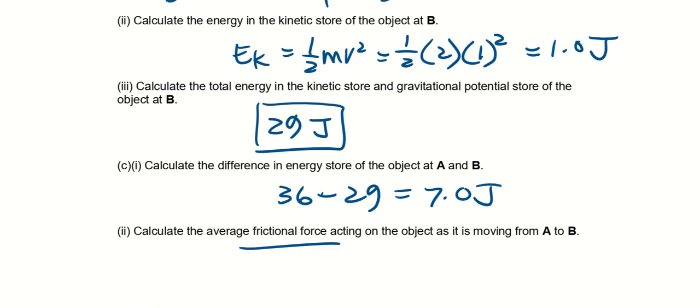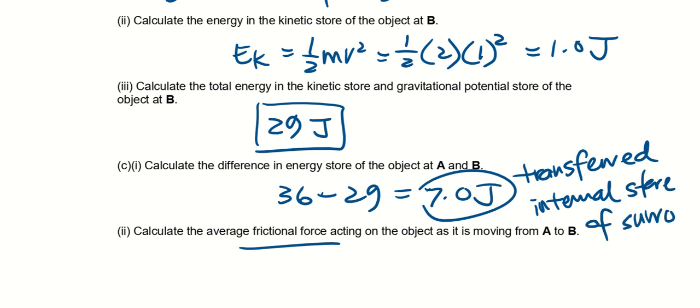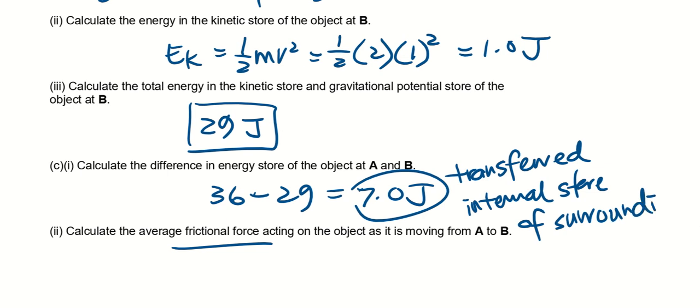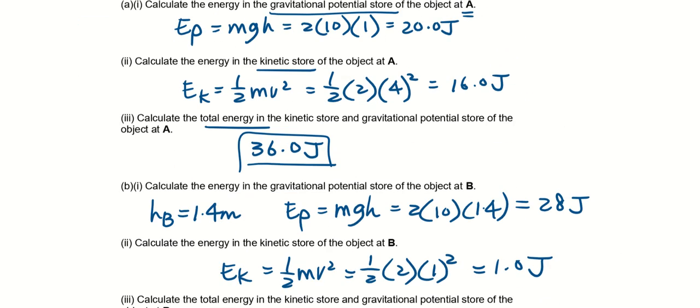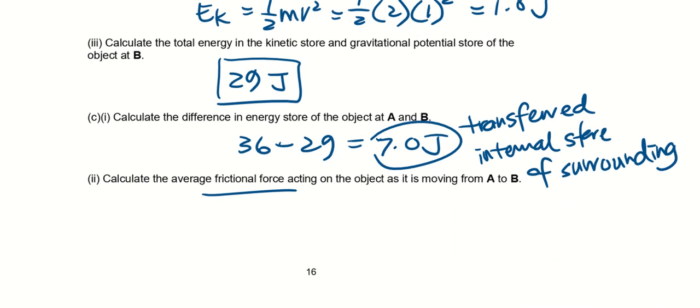Now calculate the average frictional force acting on the object. So this 7 joules is actually transferred to the internal store of the surrounding. It is not given back, it is not transferred to the kinetic store nor gravitational potential store of the object. So this 7 joules is considered not returned to the object, so there must be frictional force.